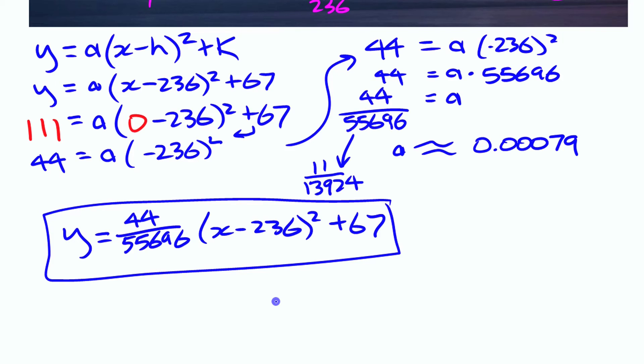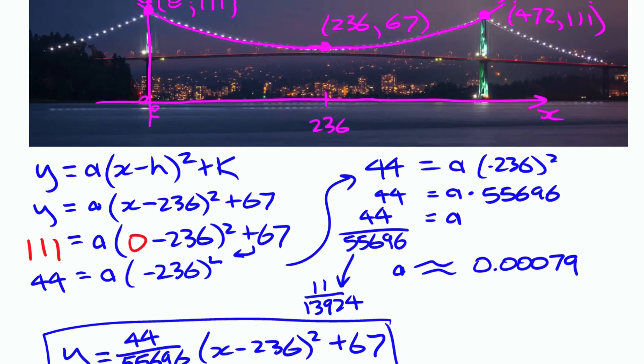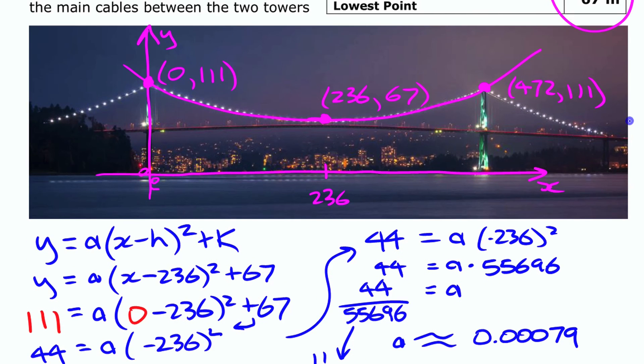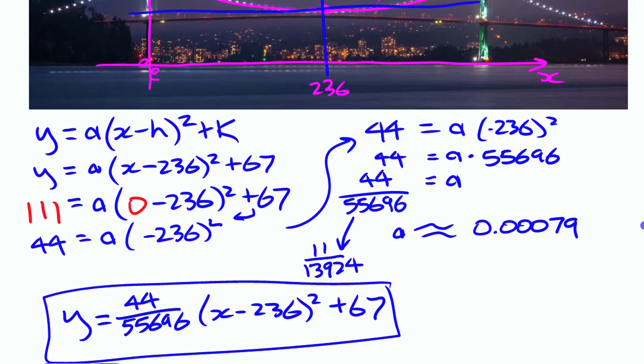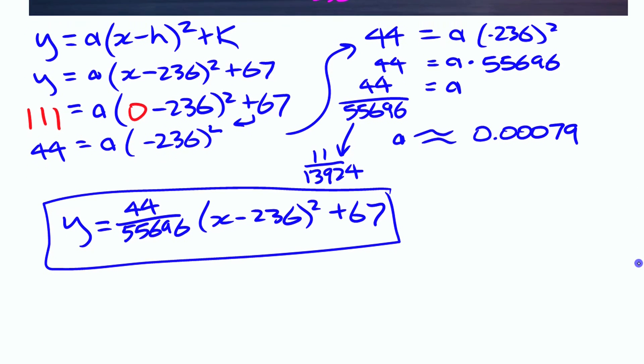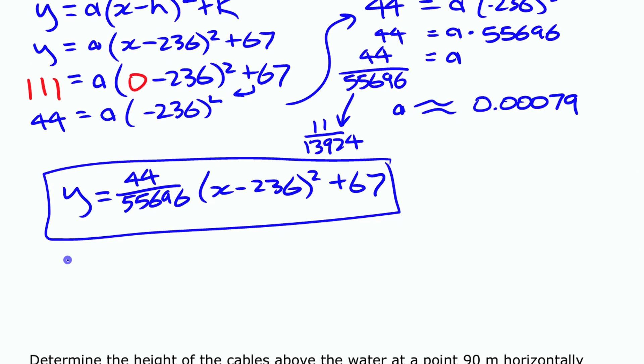You could also go back up here because you could have done this exactly the same thing but put the axes right here through the bottom of the cables. If you had done that, you would have had all the same things here, but you would have got your equation in the end to be y equals—you would have got this same thing—but it would be x² because this would have been 0 and this would have been 0.